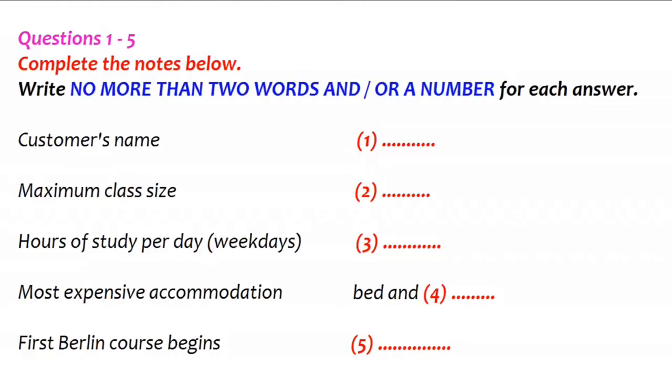P-E-T-T-E-R-S-S-O-N. That's a double T and a double S. Am I right? That's right. Now, could I ask you where the course takes place?